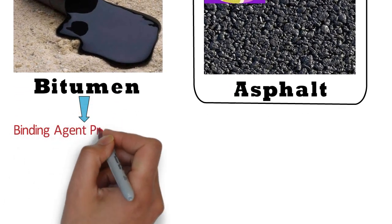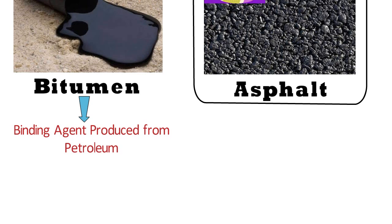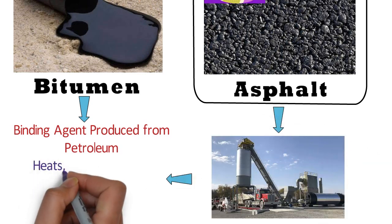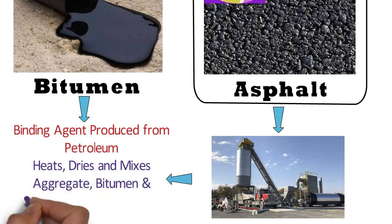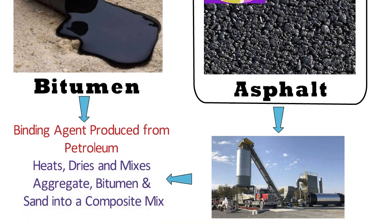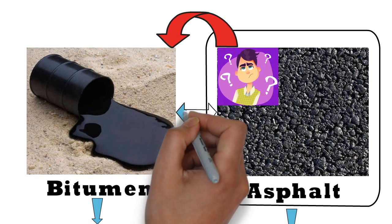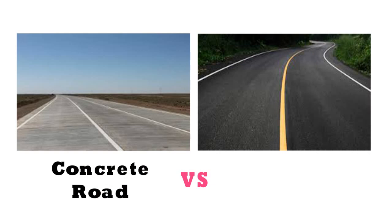Bitumen is the bonding agent produced from petroleum. Whereas asphalt is produced in a plant that heats, dries, and mixes aggregates, bitumen, and sand into a composite mix. I will make a separate detailed video explaining the differences between these two. So let us discuss the differences between concrete roads and asphalt roads.